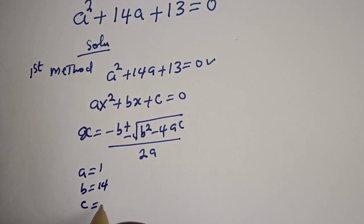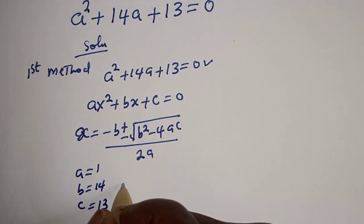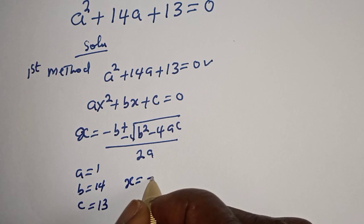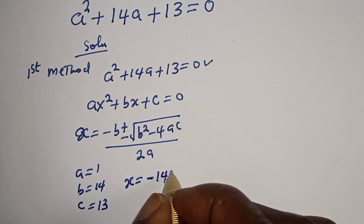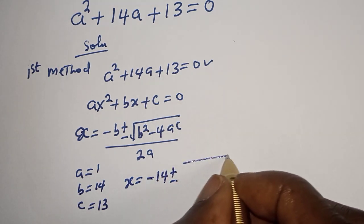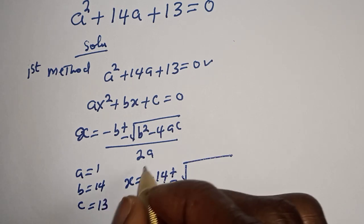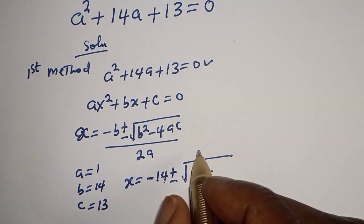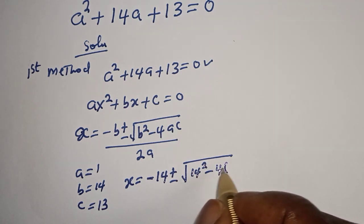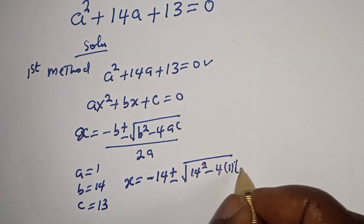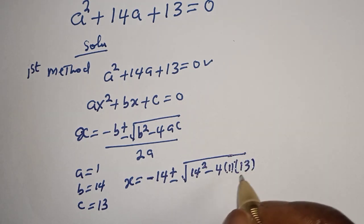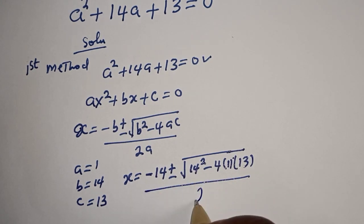From this question, a is equal to 1, b is equal to 14, c is equal to 13. So s is equal to minus 14 plus or minus square root of b squared — that is 14 squared — minus 4 multiplied by a (which is 1) multiplied by c (which is 13), over 2 multiplied by a (which is 1).